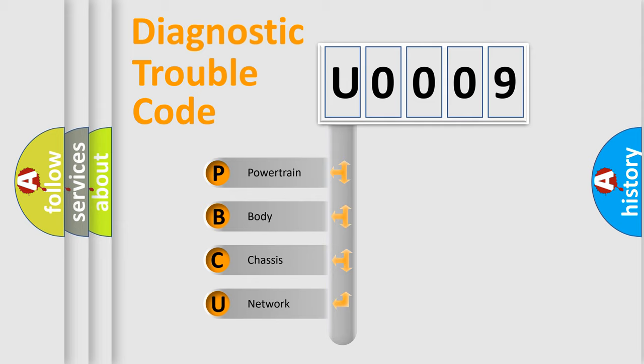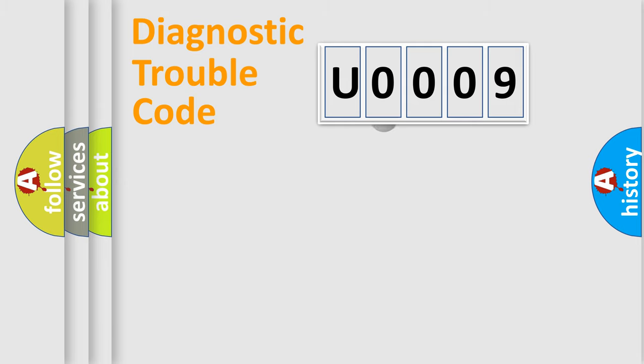We divide the electric system of automobiles into four basic units: powertrain, body, chassis, and network. This distribution is defined in the first character code.